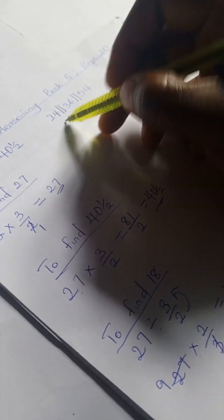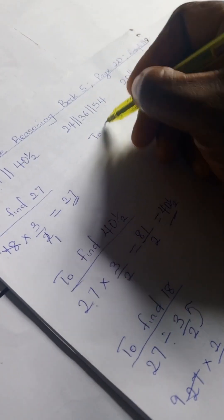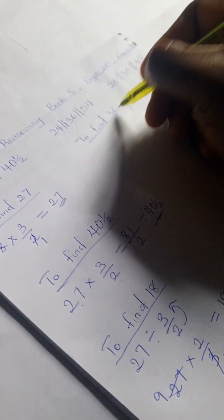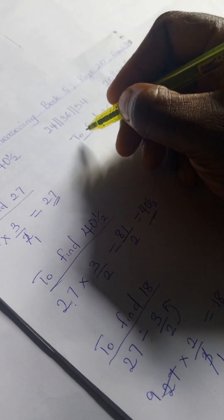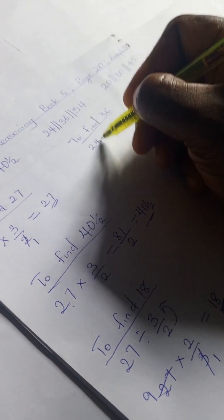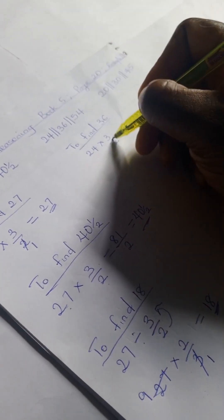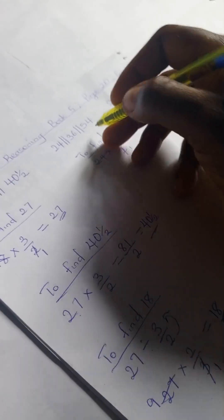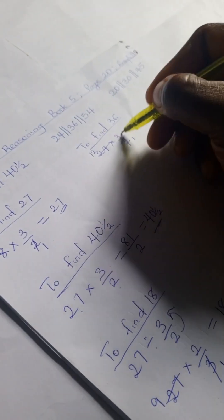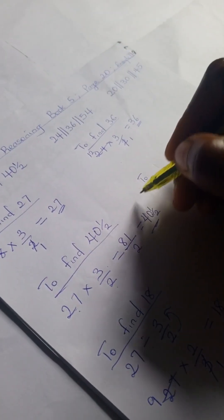Let's try this pattern for the next example. To find 36, we have 24 times 3 over 2. 2 divides into 2 giving 1, and 2 divides into 24 giving 12. 12 times 3 gives us 36.